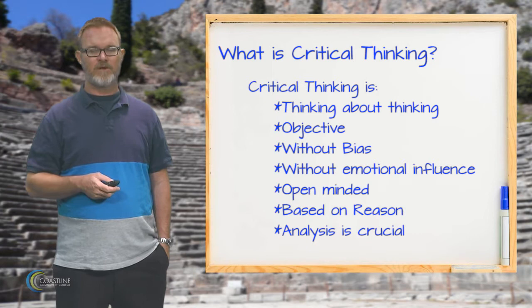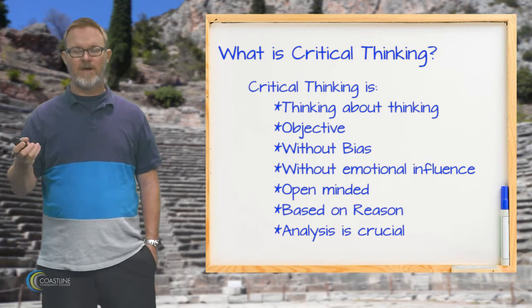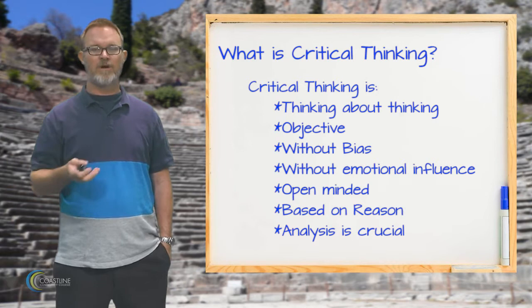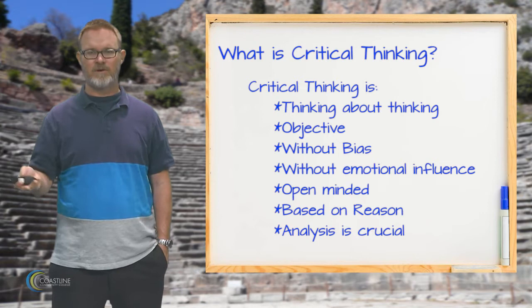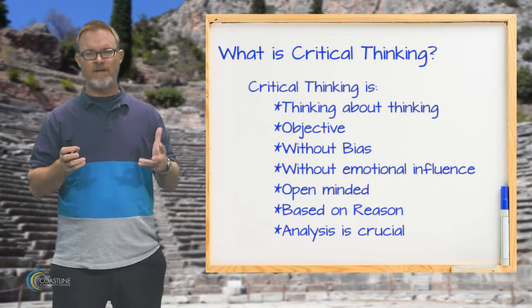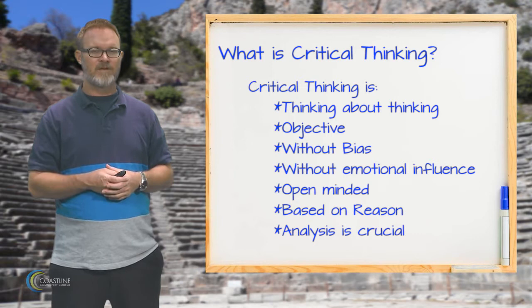A couple of things about what we want to do as critical thinkers: first, we want to be objective. Objectivity, as opposed to subjectivity, means being level-headed, cool, and calm in thought — not letting bias or emotions like sadness or anger affect your thinking. We want to be as objective and open-minded as we can, open to every possibility, even the possibility that something we believe could be false.